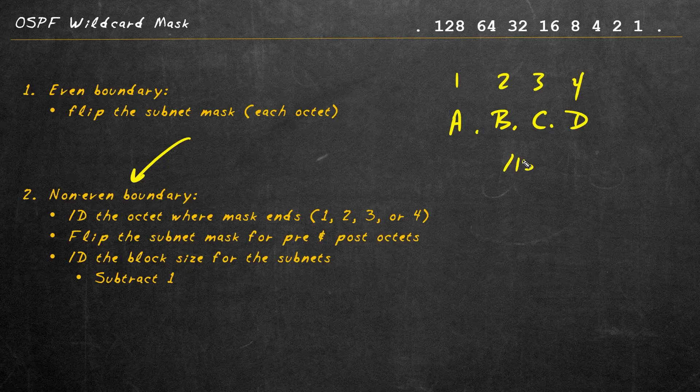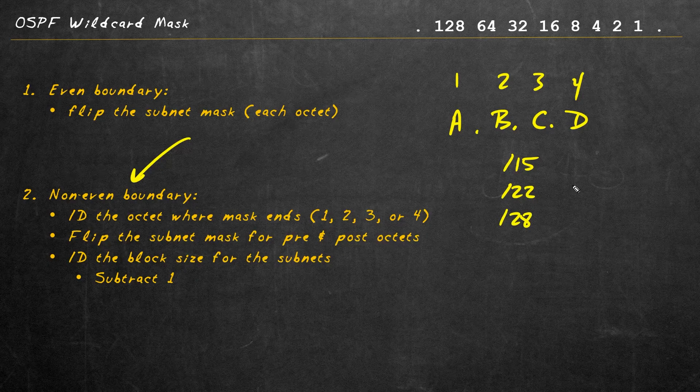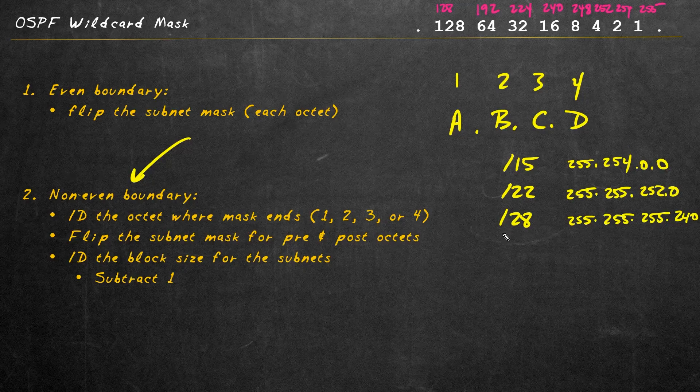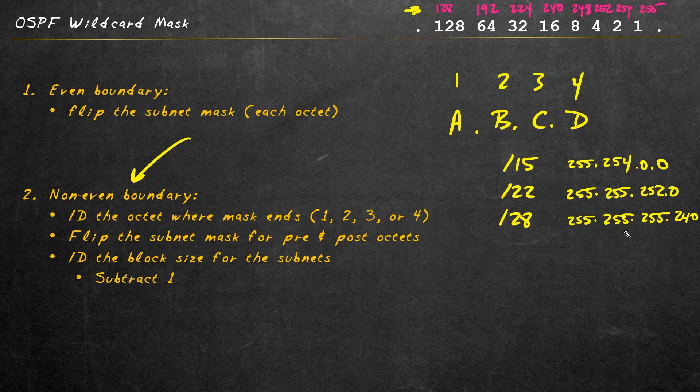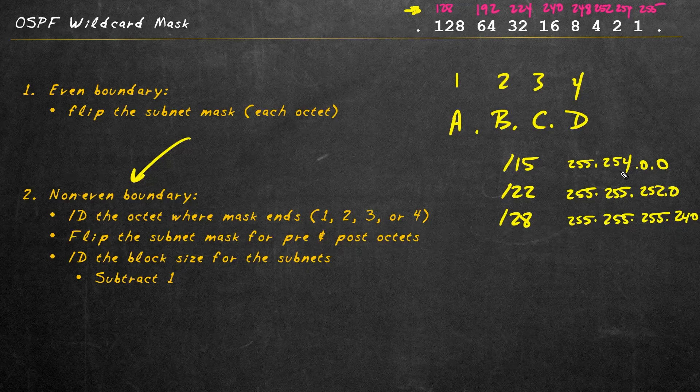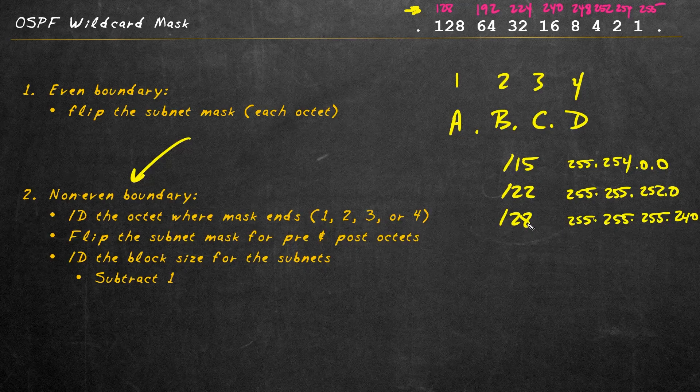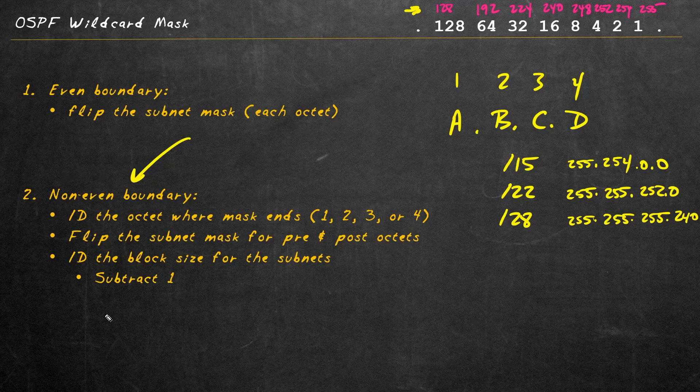When we have a mask like a slash 15, or a slash 22, or a slash 28, I'll put the decimal equivalents here on the right. The decimal equivalent would look like this for these masks. And I just wrote a little cheat sheet here at the top, just to help make sure that my numbers are correct for the dotted decimal representation of those network masks. So these three examples, a slash 15, a slash 22, and a slash 28 are all great examples of where we have the mask ending on a non-even boundary.